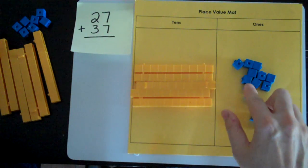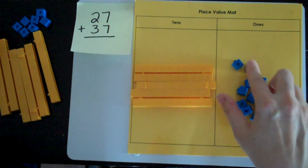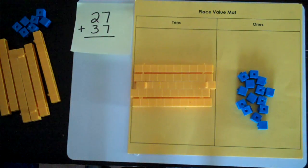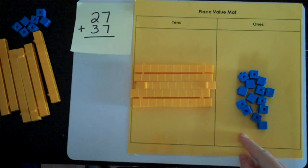Now I'm ready to find out what number I made. One, two, three, four, five, six, seven, eight, nine, ten, eleven, twelve, thirteen, fourteen. I have 14 ones. That's too many. I only can have between zero and nine in the ones place. So I need to trade.